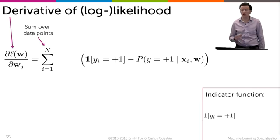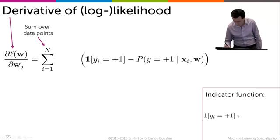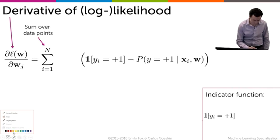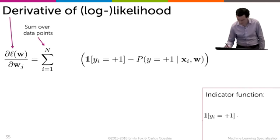between what's called the indicator function that the data point is plus one. So an indicator of whether this data point is positive. I'm going to specify it at the bottom here.